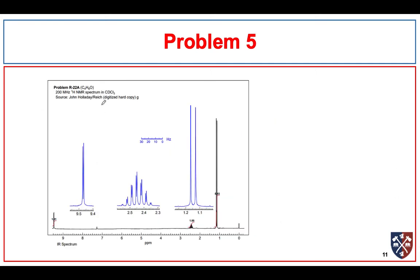Problem 5. We are given a molecular formula. Note: the unsaturation number should be U equals 1, not 2 — my mistake. C4H8O with an unsaturation number of 1.